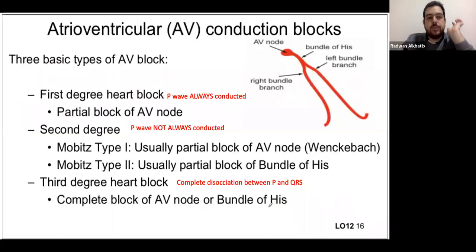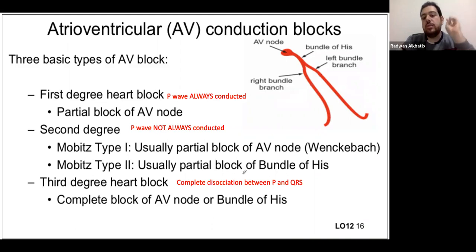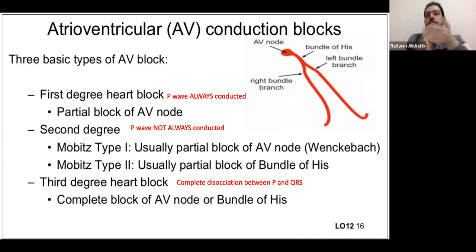Next: AV conduction block. There are three types — first, second, and third degree. Rule of thumb: first degree — P wave is always conducted. Second degree — P wave is not always conducted. Third degree — complete dissociation between P and QRS. AV block occurs when a pathology affects the AV node, causing it to prolong the time between PR and QRS. This can result from medications, myocardial infarction, or reduced blood supply to the AV node.